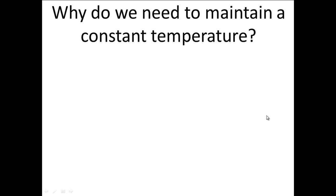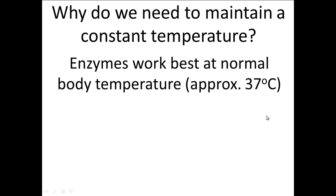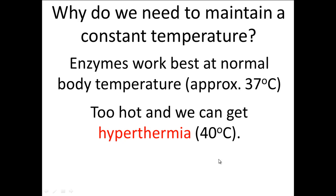So why do we need to maintain a constant temperature? Well, the most important reason is enzymes. Enzymes are biological catalysts that speed up chemical reactions. They also have an optimum temperature which is approximately 37 degrees. If our core temperature gets too high, we suffer from hyperthermia and the enzymes start to denature and no longer work. If our core temperature gets too low, we suffer from hypothermia and the enzyme's rate of reaction starts to slow down.